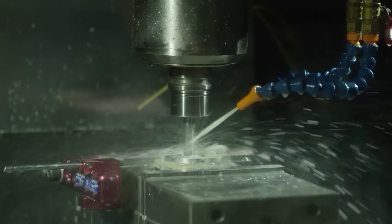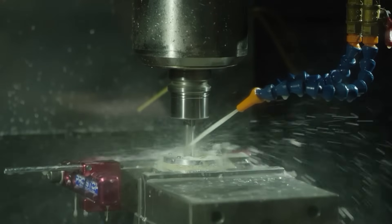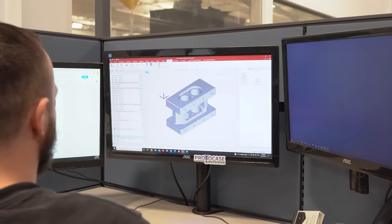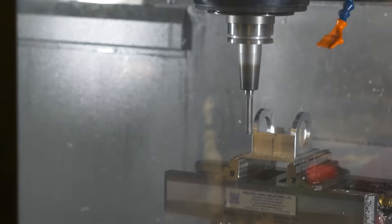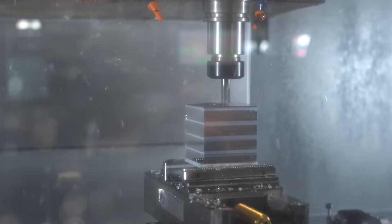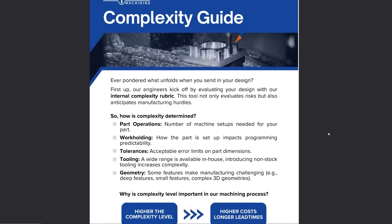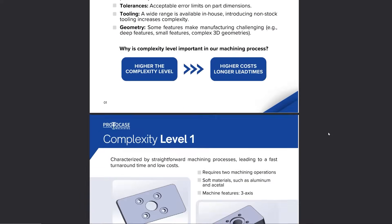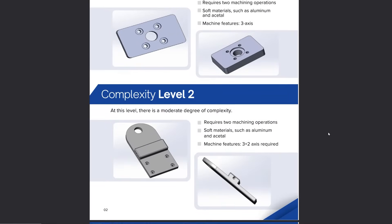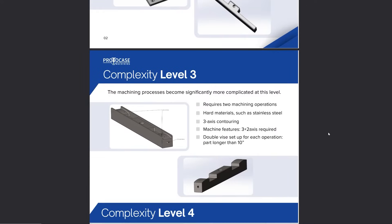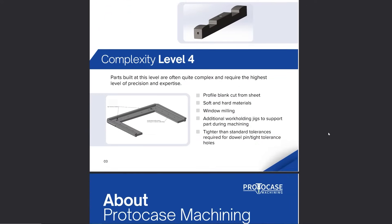The process of CNC machining is perfect for creating complex parts with incredible precision and accuracy, and since it's automated it greatly reduces the chances of errors, ensuring high quality parts are produced quickly. At Proto Case and Proto Space MFG, we have the capability to manufacture fully finished machine parts really quickly. To give you a better idea of our CNC machining processes and capabilities, we've put together a complexity guide which you can download from the link in the description below.